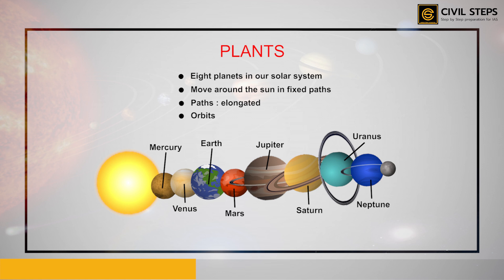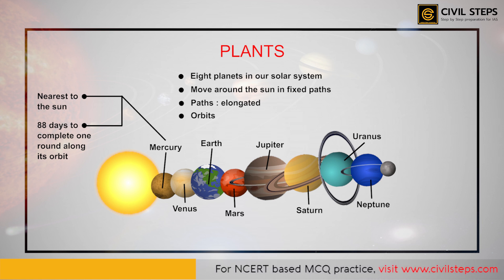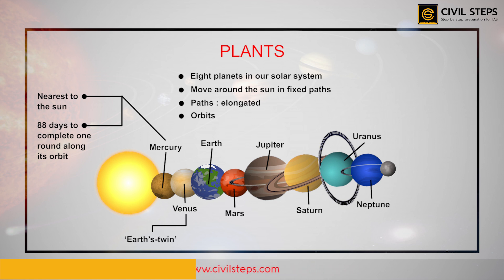Mercury, which is the nearest planet to the Sun, takes about 88 days to complete one round around its orbit. Venus is considered to be Earth's twin. It is called the twin of Earth because of its size and shape, which are very much similar to that of the Earth.